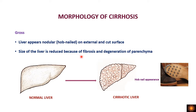The size of the liver is reduced in cirrhosis because of loss of hepatic parenchyma due to necrosis of hepatocytes, and at the same time there is increased deposition of collagen and fibrosis causing contraction. Because of the loss of parenchyma and increased fibrosis, there is a decrease in the size of the liver.